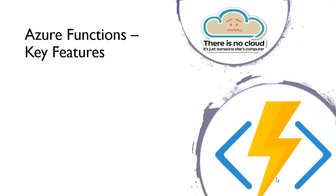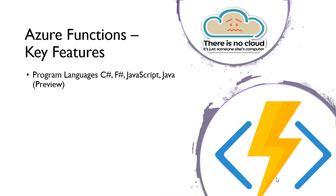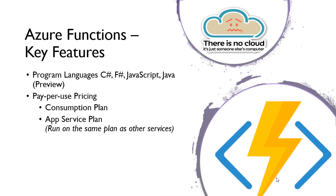Starting with Azure Functions, there are a number of key features. It supports the following programming languages: C#, F#, JavaScript, and Java is now in preview — you may not get asked that on the exam, but good to know for the future. Pay-per-use pricing is a key feature of serverless functions, and it's a great thing for Azure Functions in particular. It can be used in two ways: as part of a consumption plan or an app service plan.